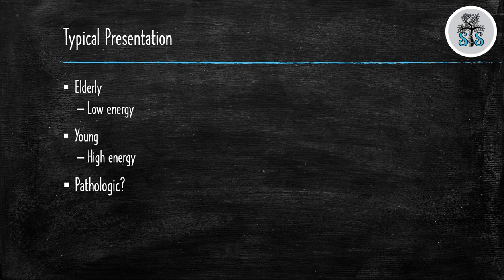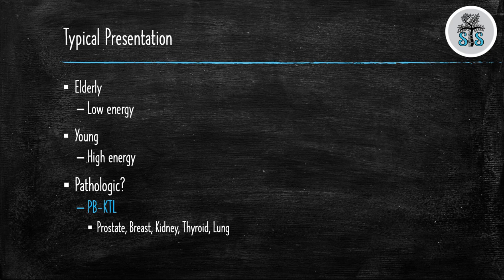Do you know the five cancers that metastasize to the bone? You can remember the five types of cancers with the mnemonic PB KTL or lead kettle. These are prostate, breast, kidney, thyroid and lung.